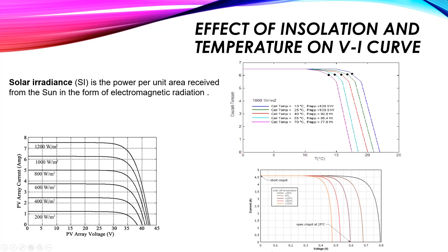Now, what is the effect of temperature on this curve? At the orange curve — 75°C — if we decrease the temperature to 50°C, the voltage increases but the current remains nearly constant. At 25°C, 0°C, and -25°C the same pattern holds. So as temperature increases — from 0° to 25° to 50° to 75°C — the voltage decreases while the current remains nearly constant.